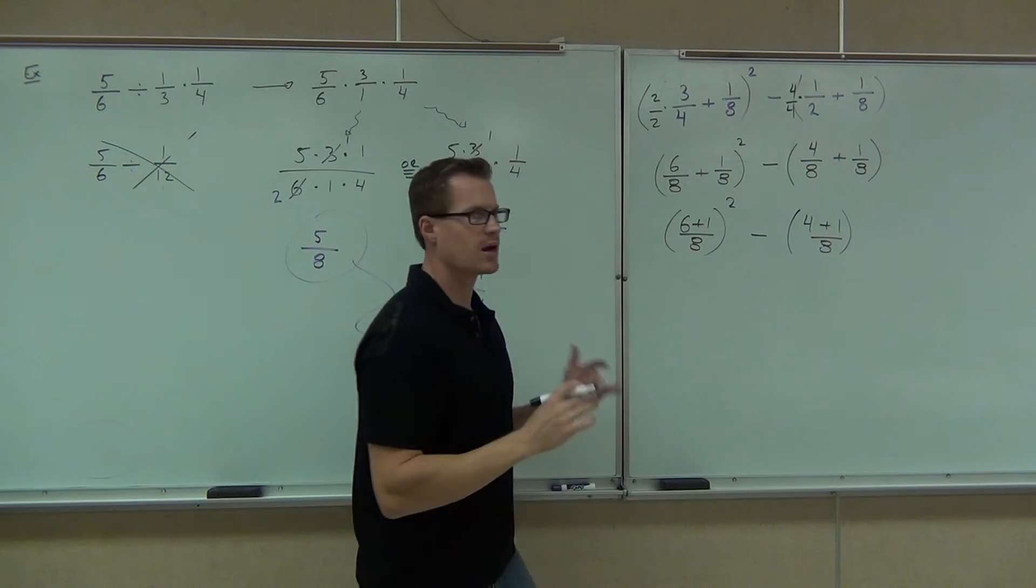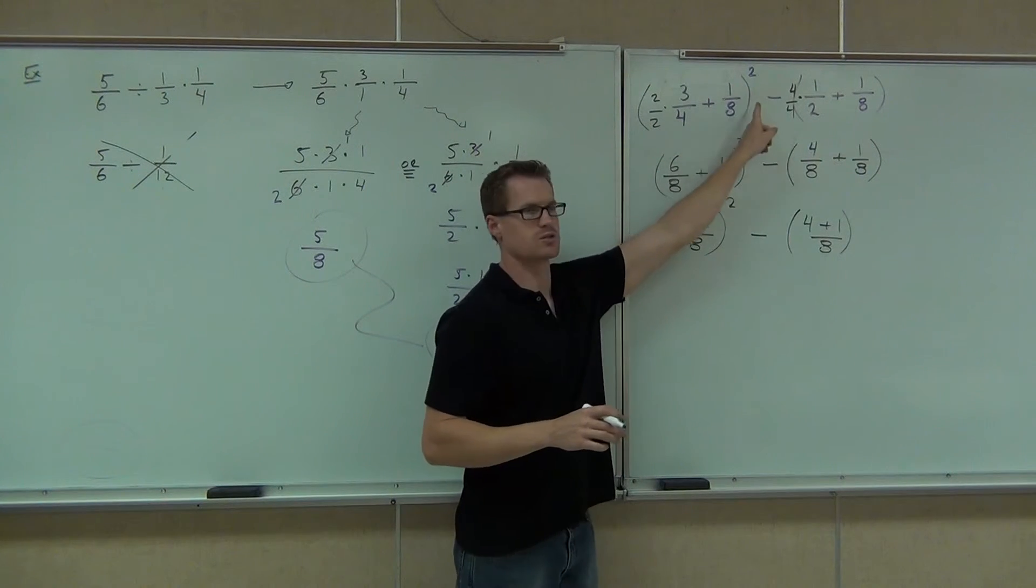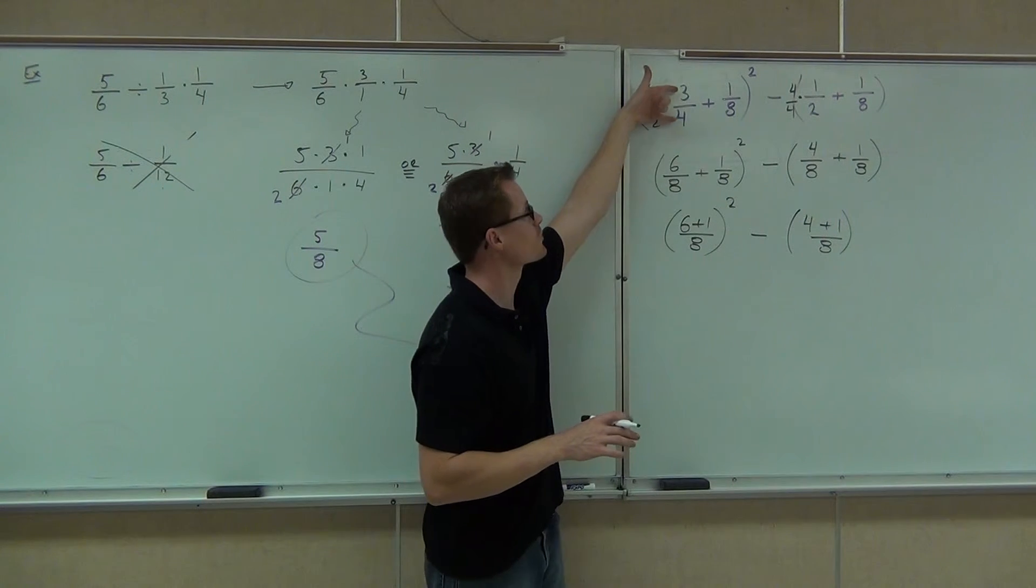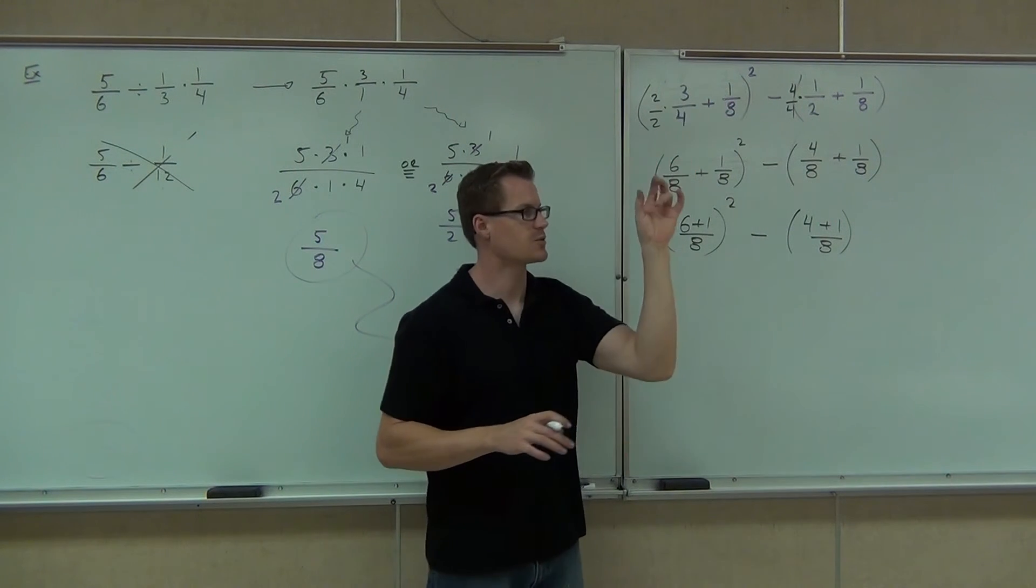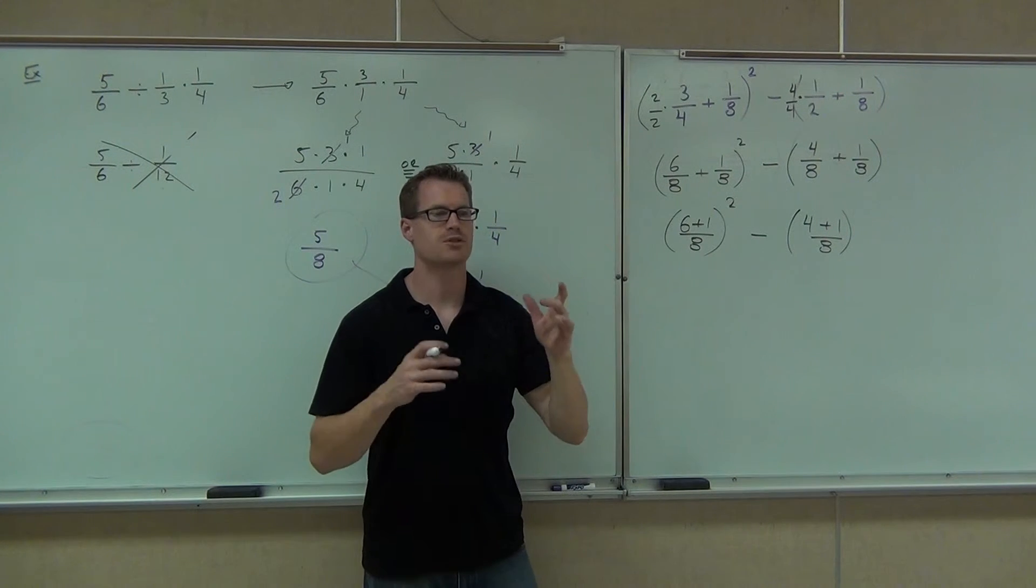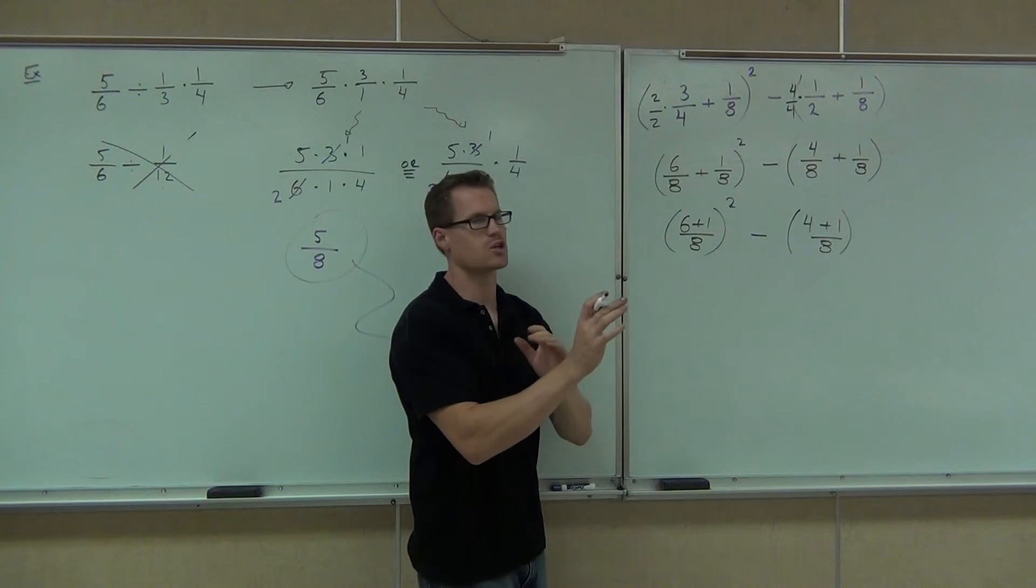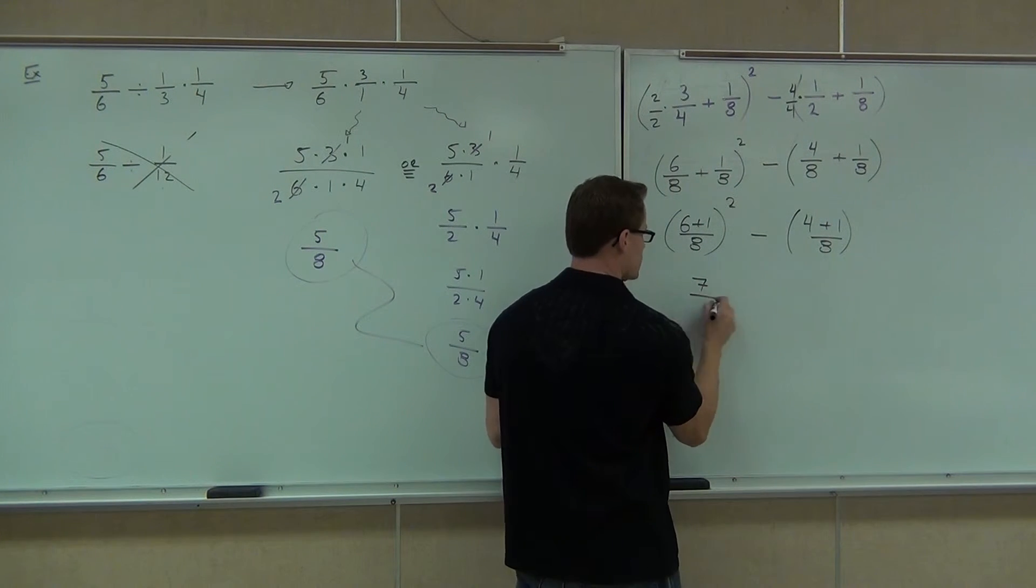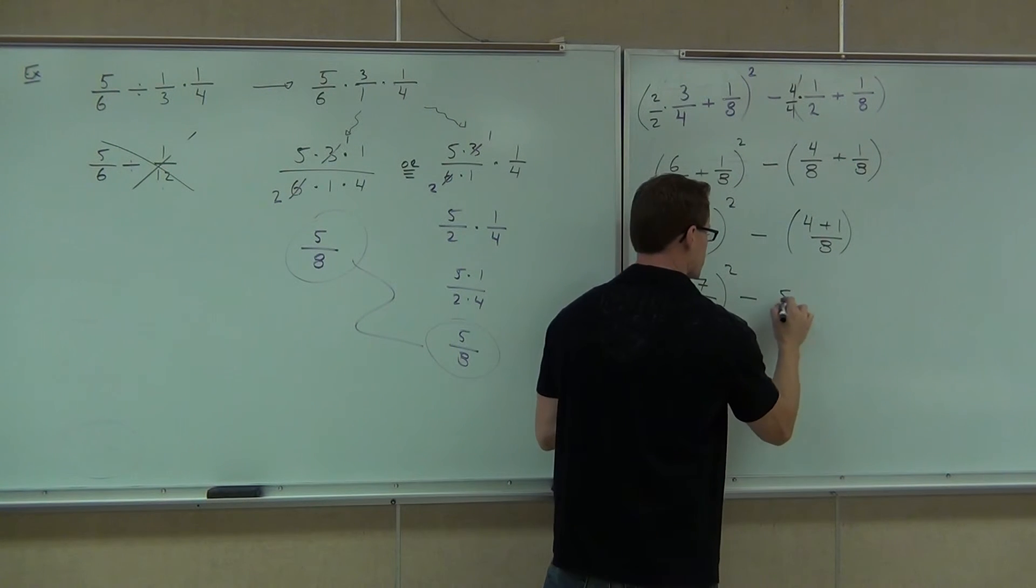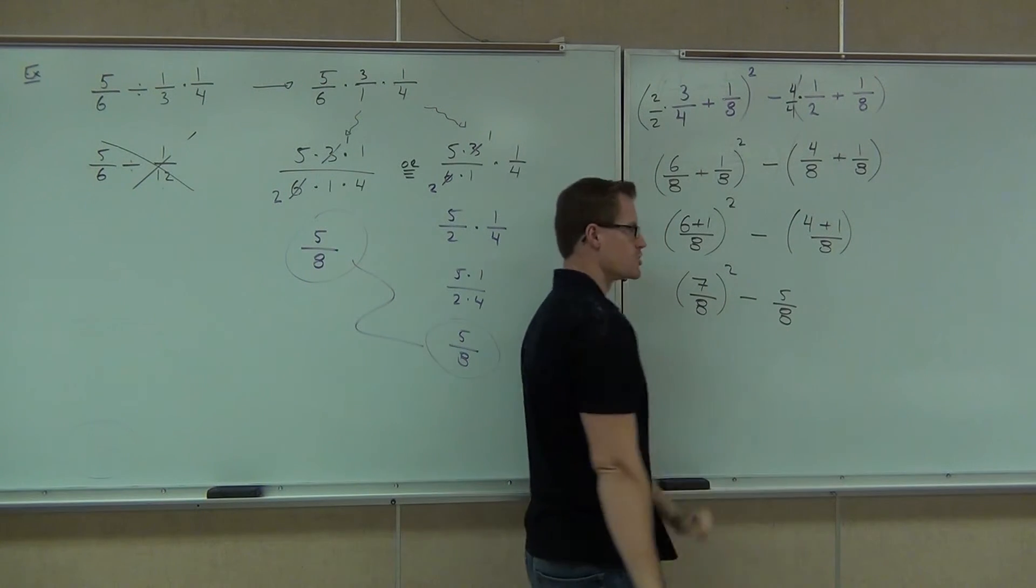So, put those together. You cannot do this. You cannot take this to a power and this to a power. It doesn't work. You can't do it. It's not legal mathematically. So, you cannot square three-fourths and square one-eighth. You have to put those together in one fraction before you square them. Is that understood? The parentheses have to come before the exponents. Otherwise, you've done exponents before parentheses. You're going to get that problem. So, we're going to get seven-eighths. Seven-eighths squared minus five-eighths. And I don't really need the parentheses anymore because I've done that problem. I have one fraction now.